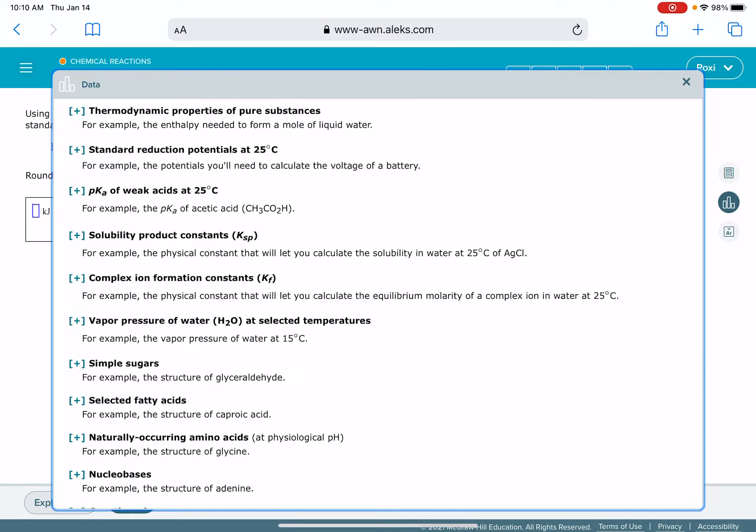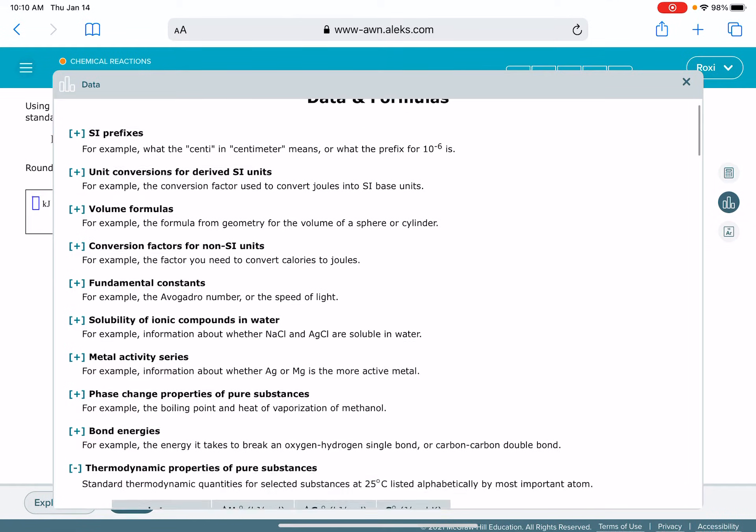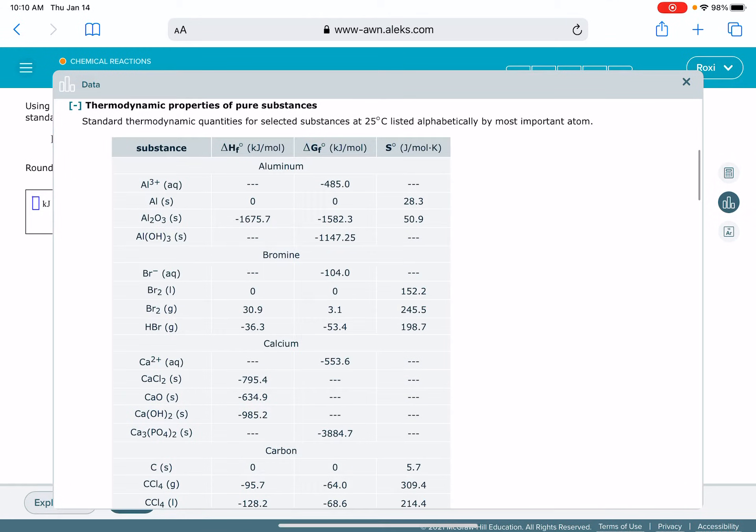So there I've moved it up at the very top. Thermodynamic properties of pure substances. This is the data that we're looking for. I'm going to hit the little plus sign to expand it. And this table has all of the delta H of formation values for all of the different substances that we'll need.